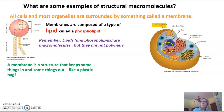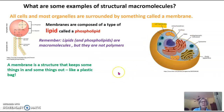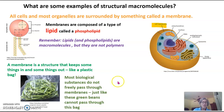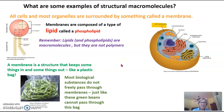This membrane composed of the lipid called a phospholipid is a structure around the cell and around the organelles that keeps some things in and some things out, kind of like a plastic bag. This plastic bag pictured here has some green beans in it. The green beans cannot freely pass through this bag, and most biological substances also cannot freely pass through a membrane.